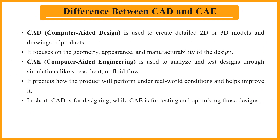What is the difference between CAD and CAE? CAD is used to create detailed 2D or 3D models and drawings of products, focusing on geometry, appearance, and manufacturing. CAE, on the other hand, is used to analyze and test designs through simulations such as stress, heat, and fluid flow analysis. It predicts how a product will perform under real-world conditions and helps improve it. In short, CAD is for designing while CAE is for testing and optimizing those designs.